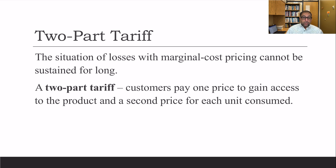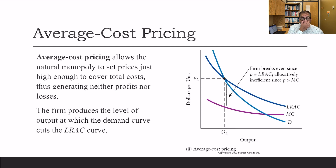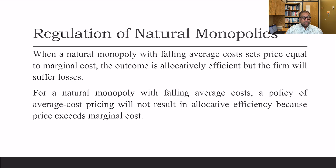Consumers pay one price to gain access to the product and a second price for each unit consumed. The third method is average cost pricing, where we price according to the demand curve where it equals the long-run average cost curve. This allows natural monopolies to set prices just high enough to cover total costs, generating neither profit nor losses. However, this policy will not result in allocative efficiency because price exceeds marginal cost.